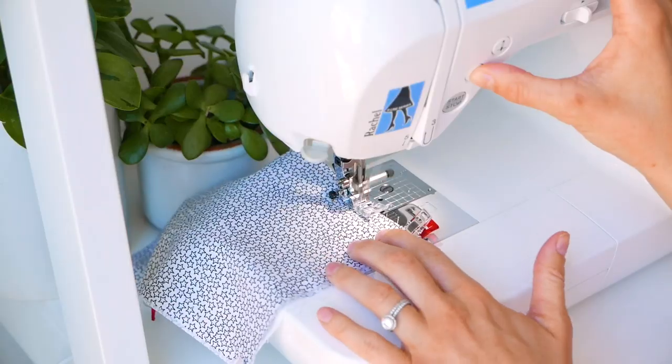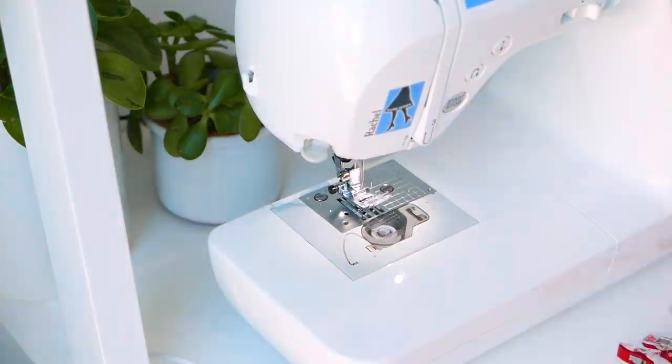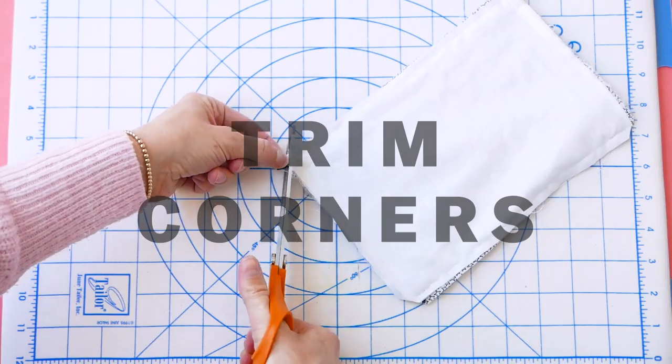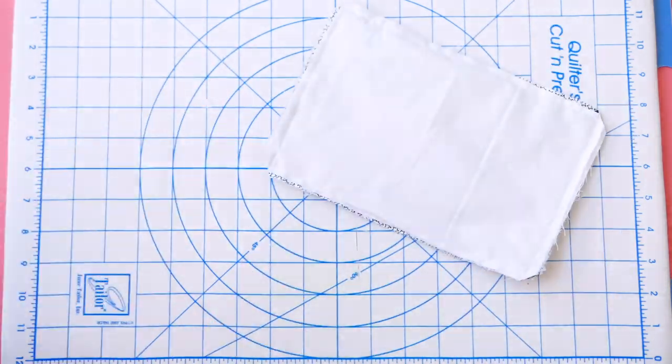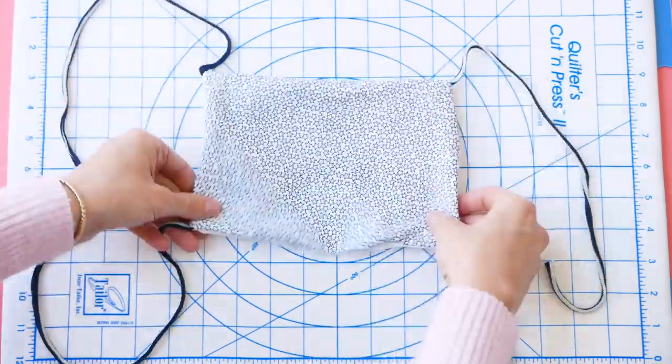Go to the sewing machine, sew around the entire rectangle, leaving a gap so you can turn it right side out. And for this double thickness one, you definitely want to make sure you trim your corners just because there's so much fabric and you want it to be neat. So snip off those corners, making sure not to cut any of your threads, and then turn everything right side out.